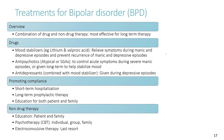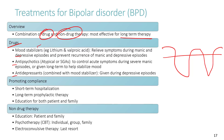The most effective management strategy for bipolar disorder is a combination of drug and non-drug therapy, particularly for long-term treatment. Drugs used include mood stabilizers (to even out the cyclical mood swings and maintain euthymic levels), antipsychotics (for acute manic states), and antidepressants (to lift mood during severe depressive episodes).